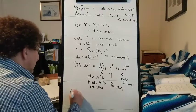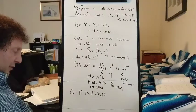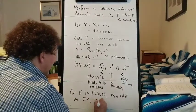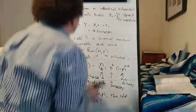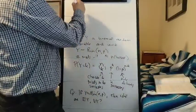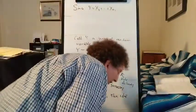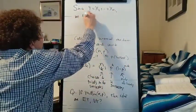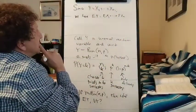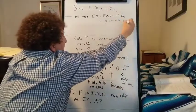Let's look at if Y is a binomial random variable with n trials and probability P on each trial of success, what are the expected value and the variance of Y? Since Y is the sum of all the Bernoulli trials, we have the expected value of Y equals the expected value of X1 up to the expected value of Xn, because expected value is linear. The expected value of a Bernoulli experiment is just P, so we have nP.